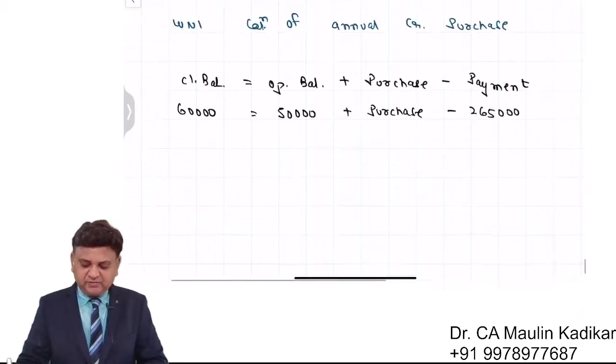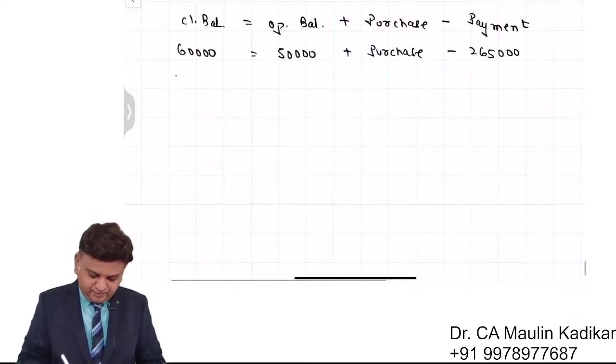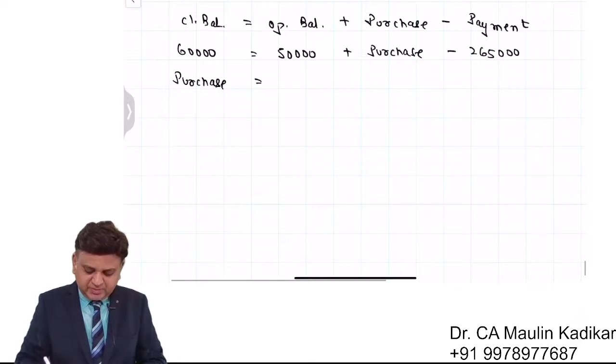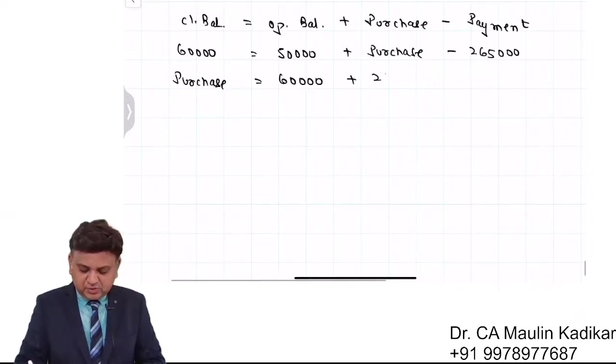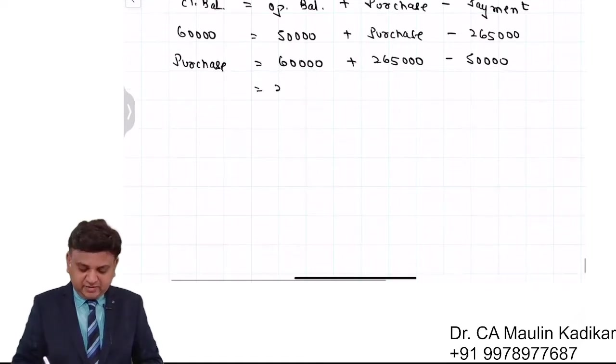So purchase will be found as a balancing figure. Purchase is equal to 60,000 plus 2 lakh 65,000 minus 50,000. Answer is 2 lakh 75,000.